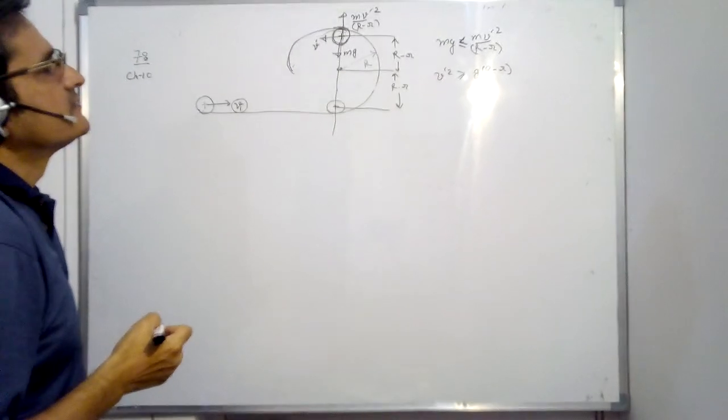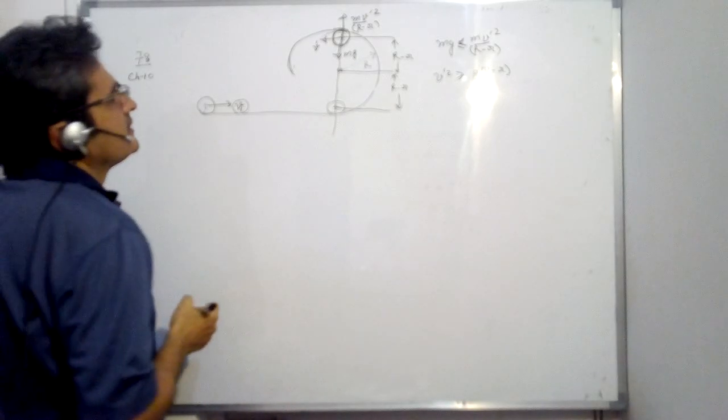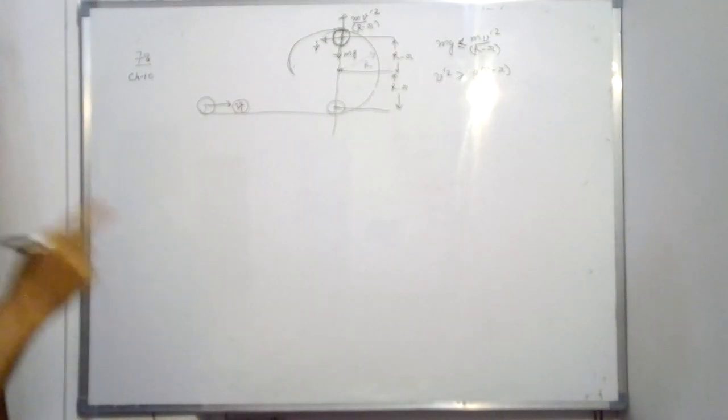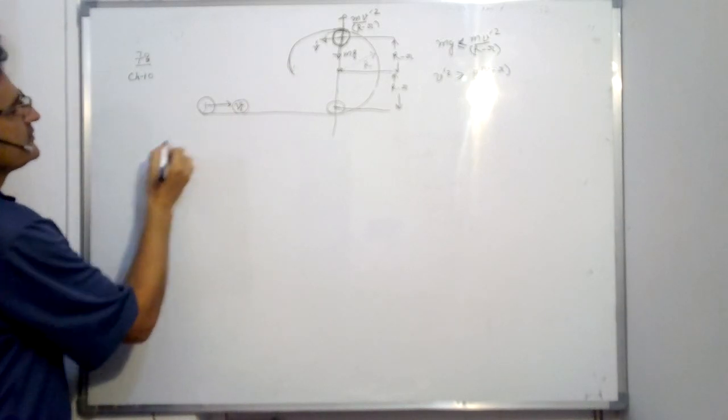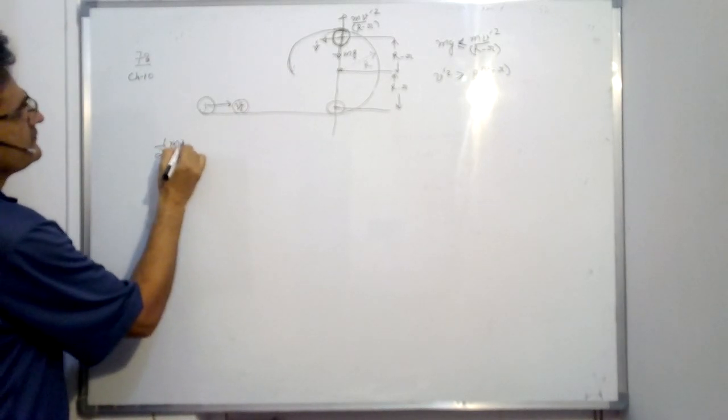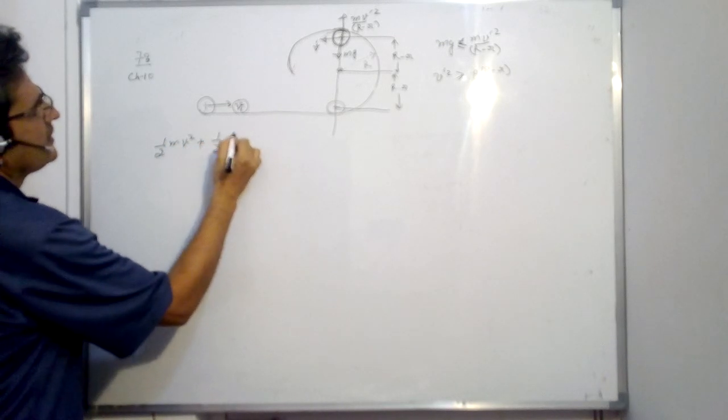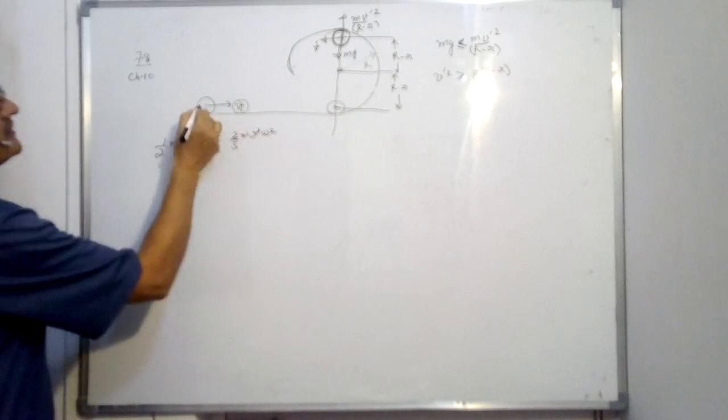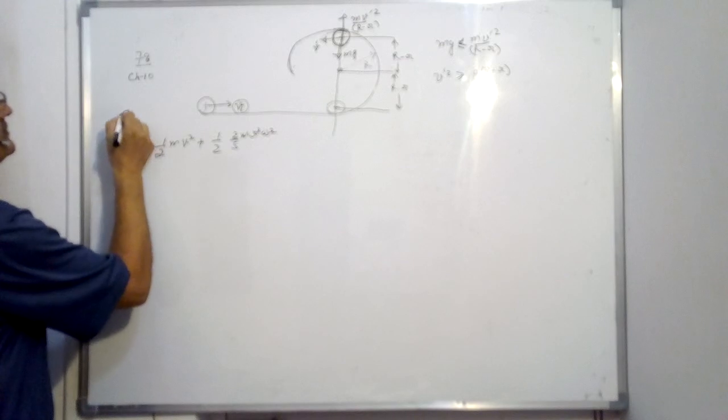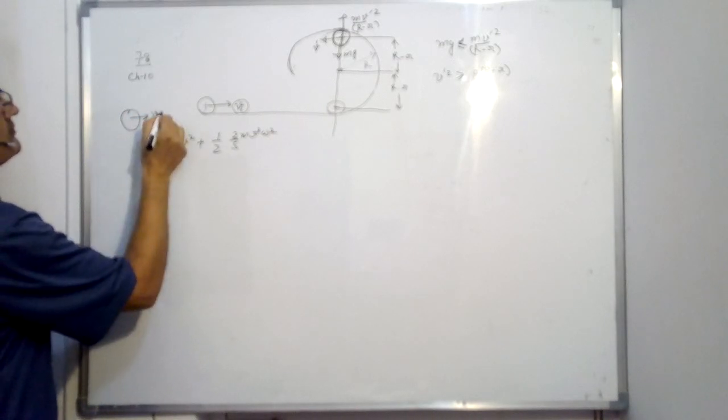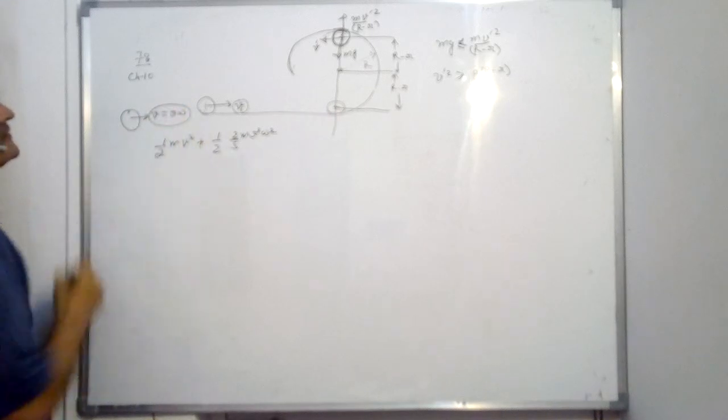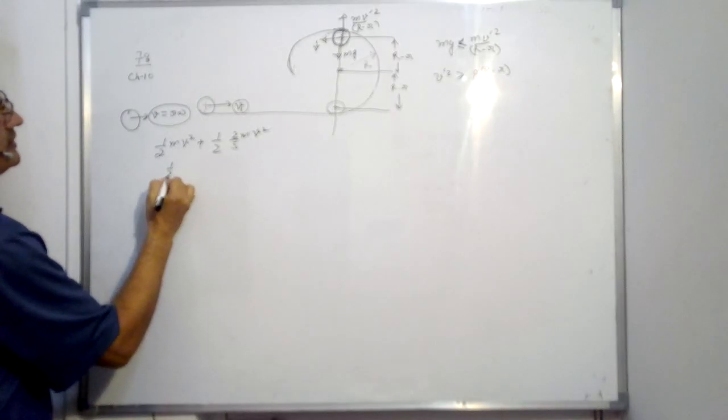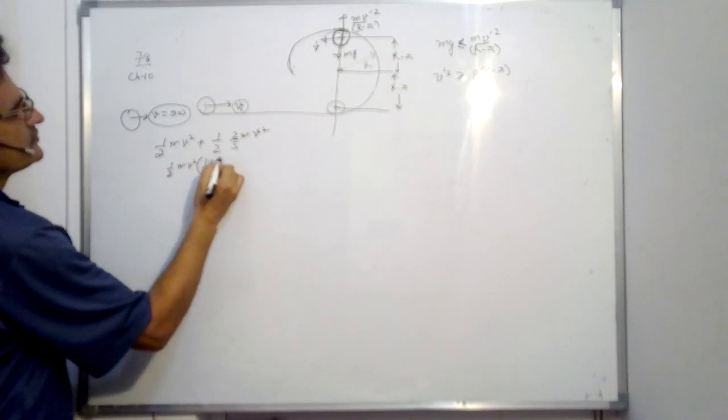This is the relationship. Now conserve the energy between the initial point and the final point. But here you have to take both the rotational and the translational energy. In case of solid sphere, the rotational energy is half MV square. Translational energy is half, I is 2 upon 5 MR square omega square. And when there is a rolling without slipping,